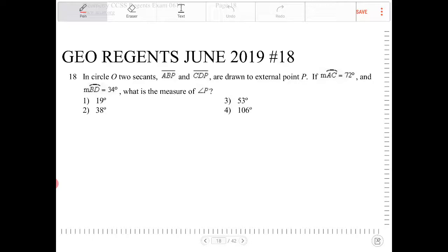So let's try and draw that description here. So I have a circle, and I have two secants, and the external point here is P, and I have A, B, P, and then C, D, P.